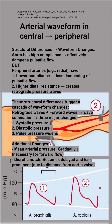The dicrotic notch becomes delayed and less prominent. The dicrotic notch is usually a little bump in the middle of the waveform that is due to the aortic valve closing. As you get further away from the aortic valve, that dicrotic notch is going to be delayed and less prominent.